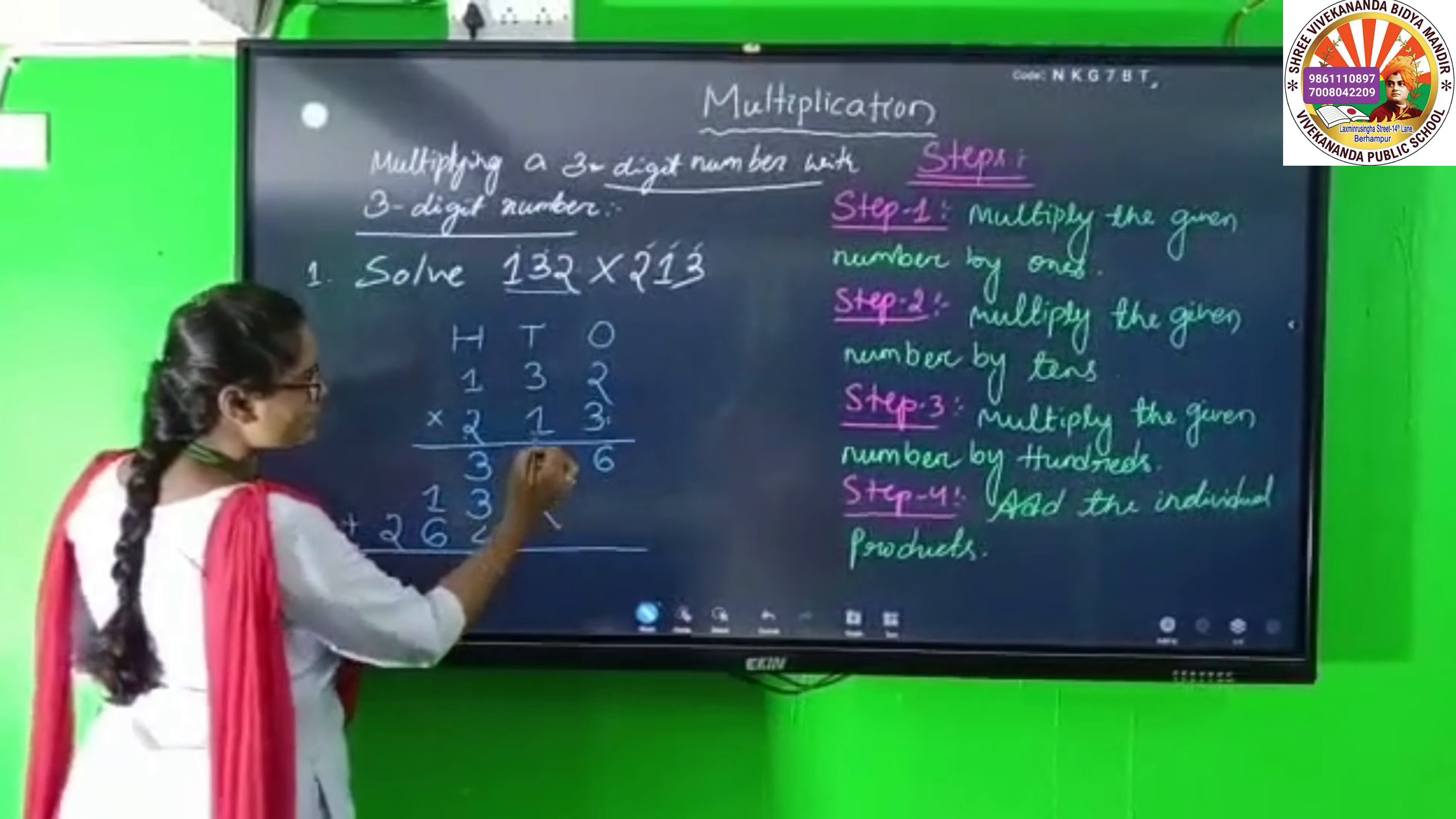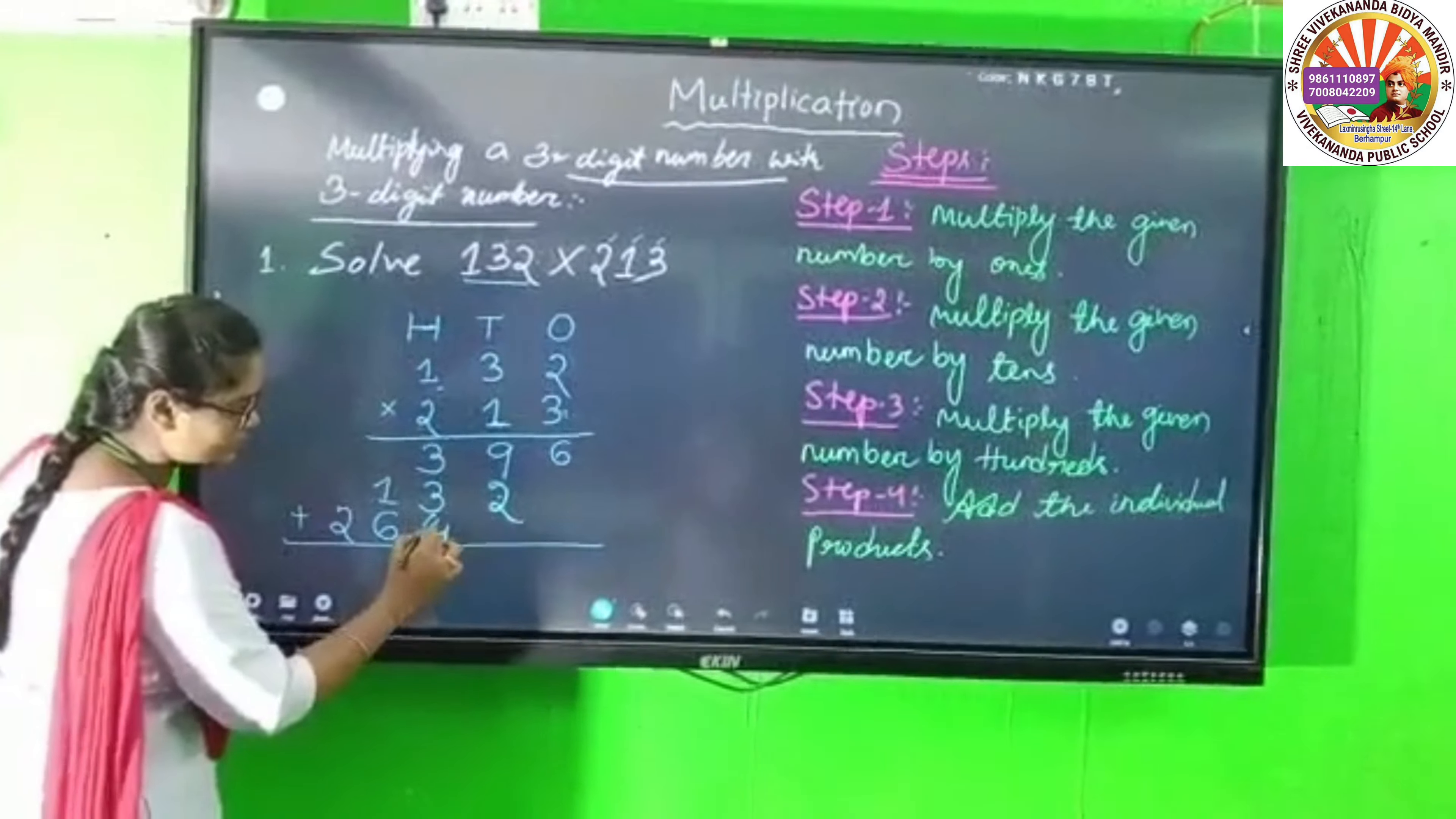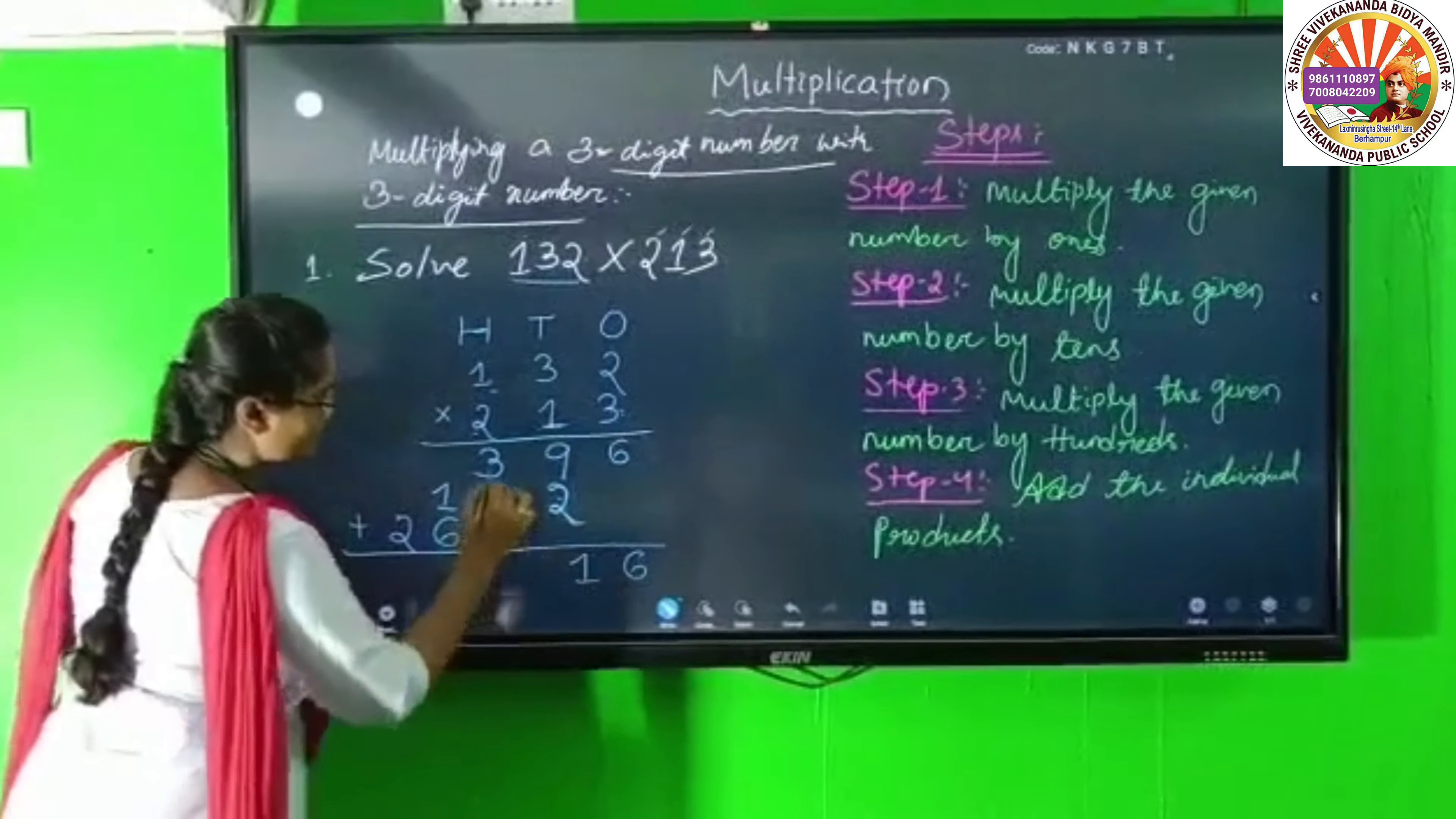Now we have: 396, 132, and 264. I will arrange them by place value - ones, tens, hundreds, thousands, and ten thousands.